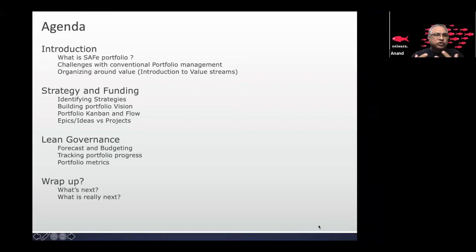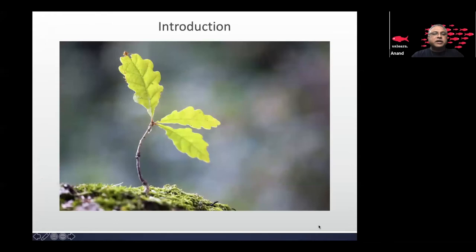The information I share is all available on the SAFe site — nothing is mine, everything is derived from the Scaled Agile Framework. A quick agenda: what is a SAFe portfolio, some challenges around current portfolios, then the most important aspect — organizing around value — followed by strategy and investment funding, governance, and finally a wrap-up on what's next.